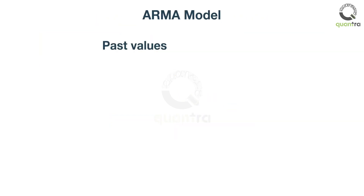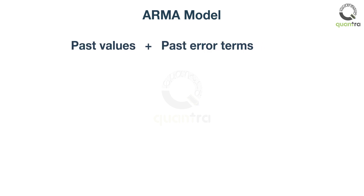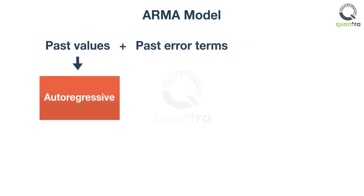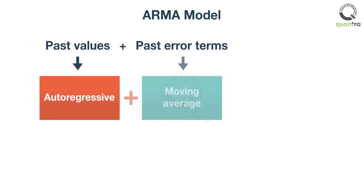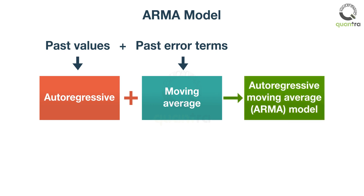Next, you will learn a model that uses both past values and past error terms of the time series for forecasting. This makes the new model more robust than an individual autoregressive or moving average model. The model is known as the autoregressive moving average, or ARMA model.